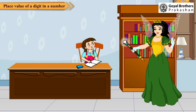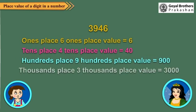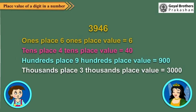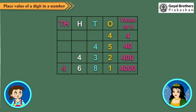Oh, yes! So now consider the number 3946. As a number moves to the left, its value keeps increasing ten times. Let us consider this table. You can see how the place value increases from right to left.